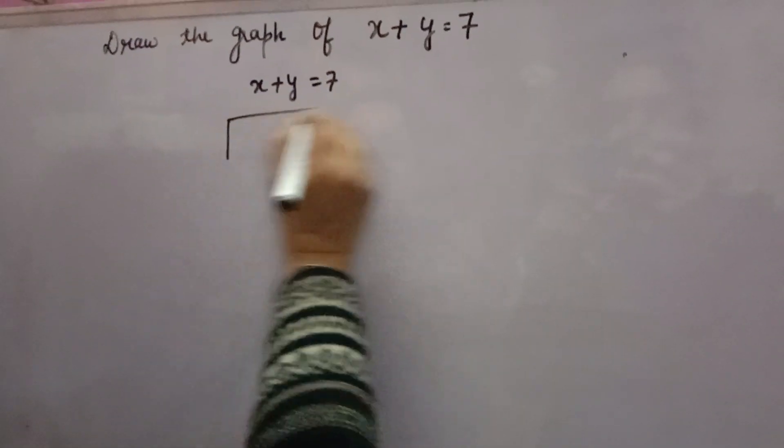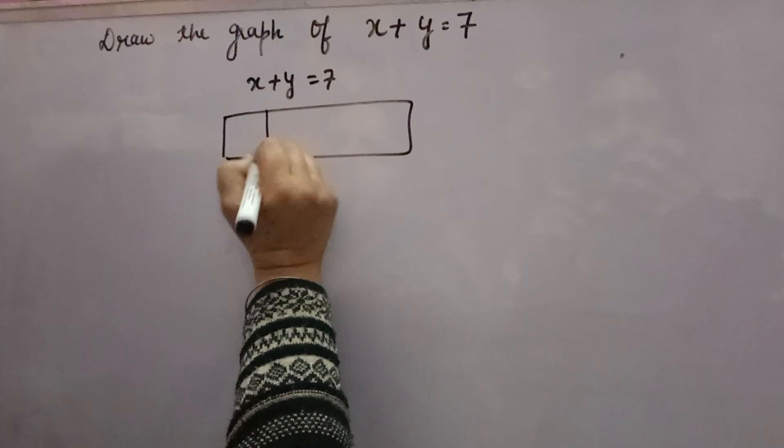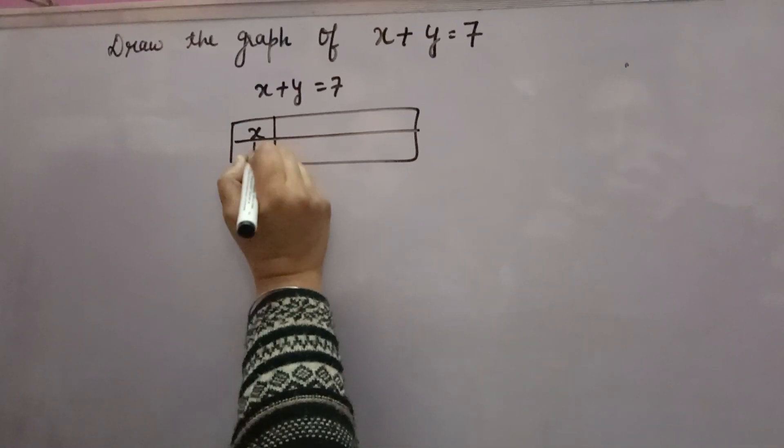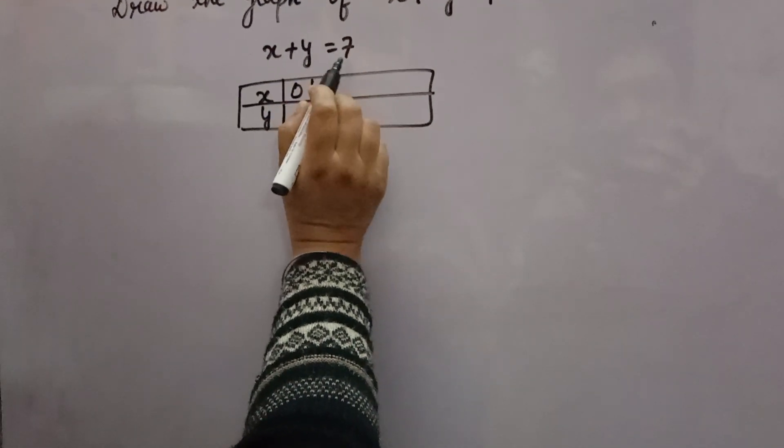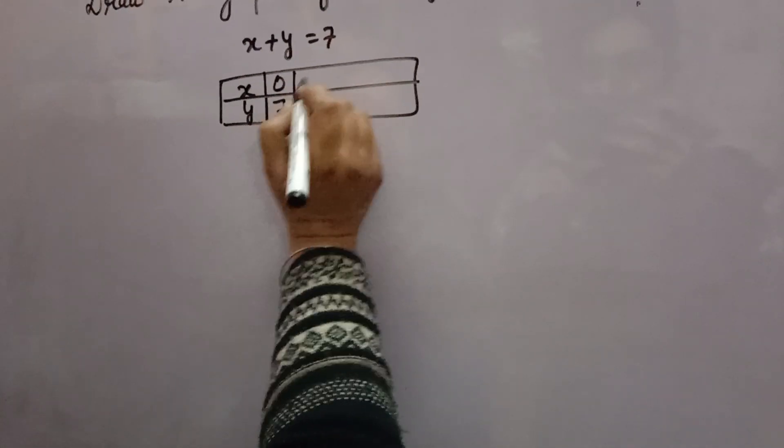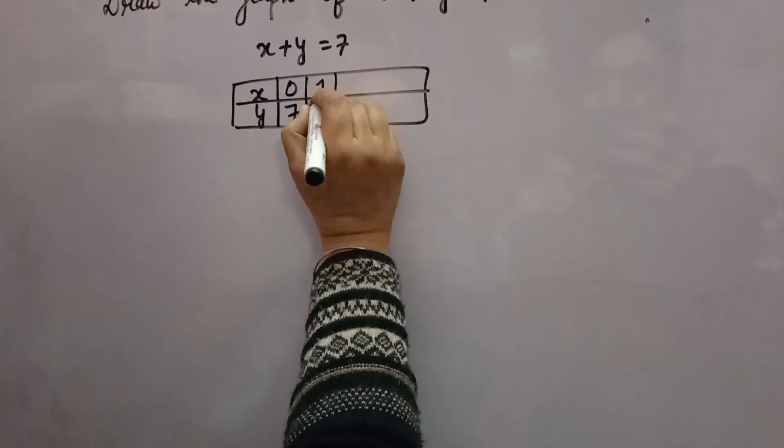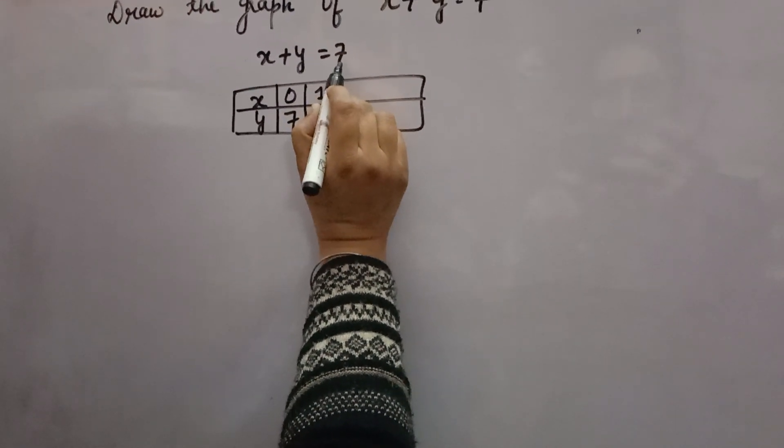Now you make a table. Give different values of x and find the corresponding value of y. Suppose x is 0, then 0 plus y equals 7, so y will be 7. Suppose x is 1, y will be 7 minus 1, that is 6.